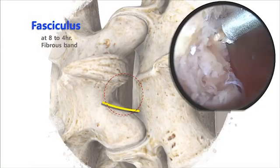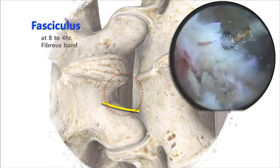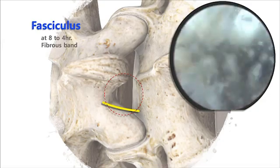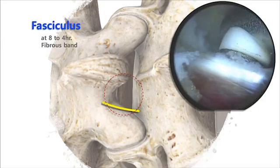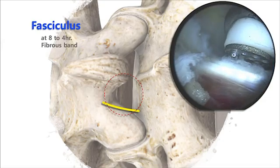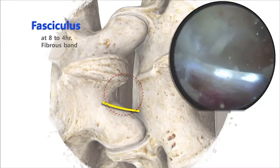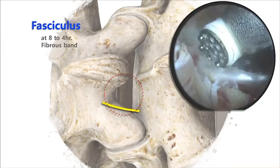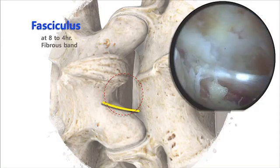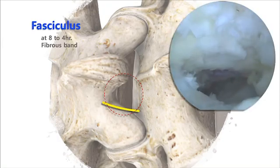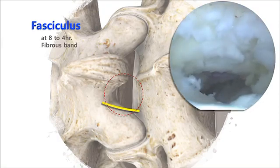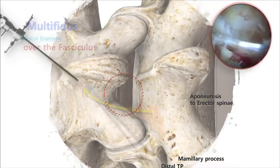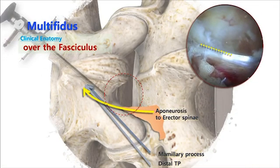During the ipsilateral posterior approach, you can see the fibrous band at the 8 to 4 o'clock direction, which lands on the dorsal surface of the lamina. It is located outside of the working space, so you do not need to eliminate the fibrous band for orientation — your target place is just inside of it.